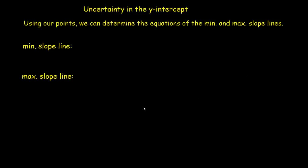It's also useful to know the uncertainty in the y-intercept. And if I take my two points, I can generate the minimum and maximum slope lines. The minimum slope line is given by, if you work this out, y equals the slope, the minimum slope, 3.40x, plus the y-intercept, which turns out to be 0.41. And the maximum slope line turns out to be y equals that maximum slope 6.76x plus 21.2.